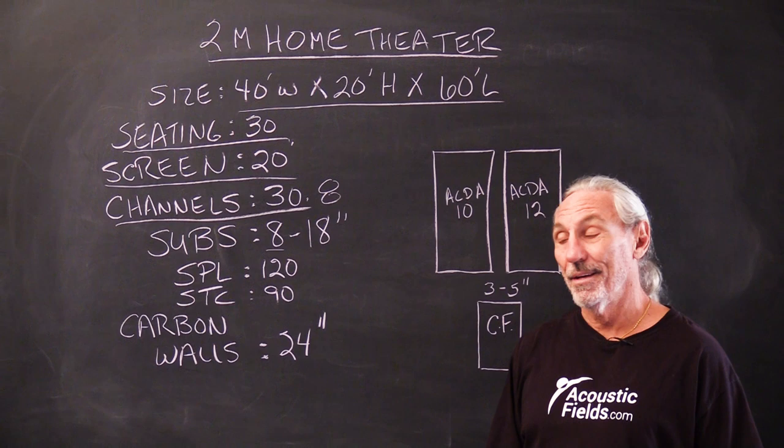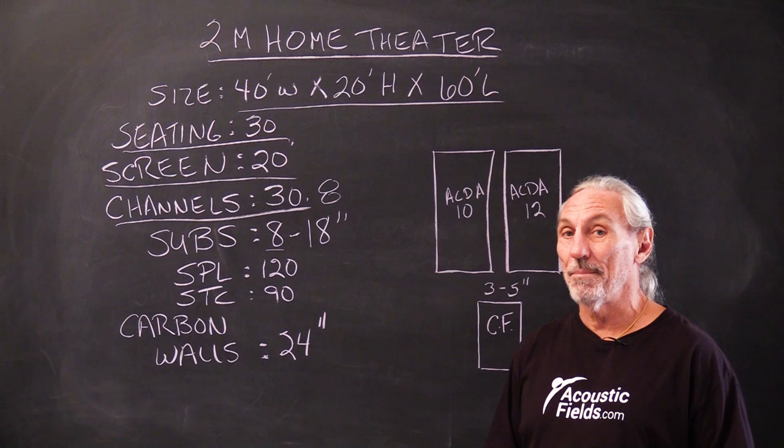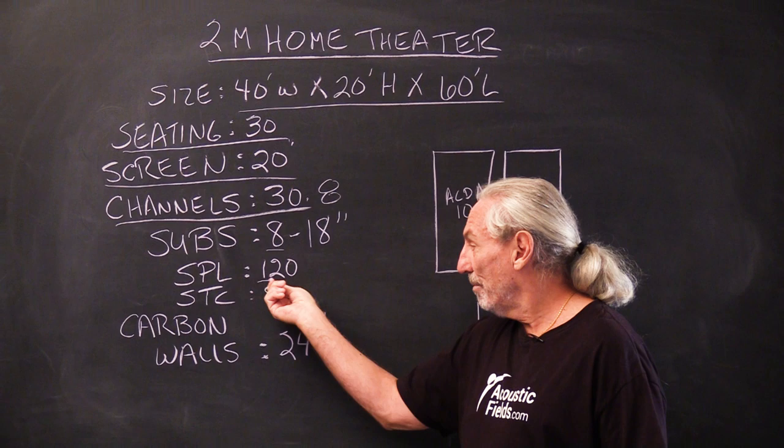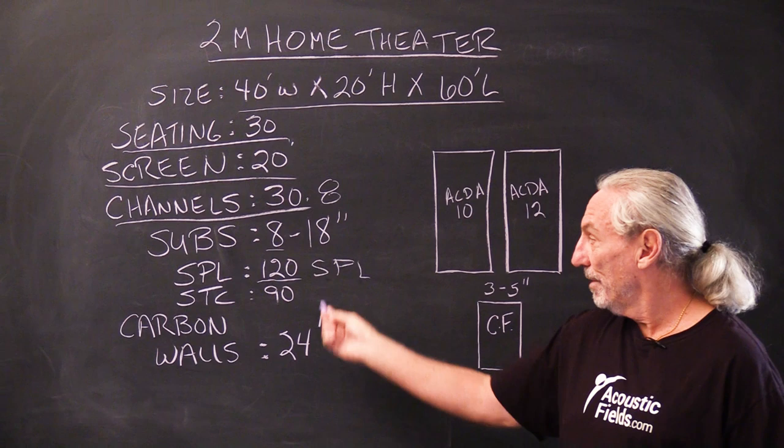This is going to be 30.8 because we're going to have eight 18-inch subwoofers. Lots of energy. Client wants lots of low frequency impact. That's why we have the room size and volume we have, and that's why we're going to talk about our double carbon wall shortly. So we'll have eight subs hitting really high pressure levels in this room.